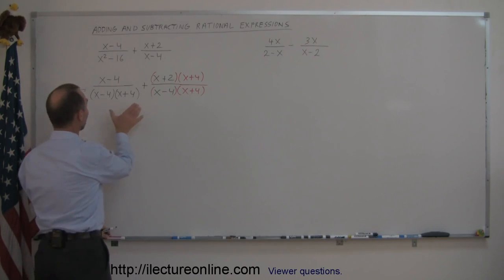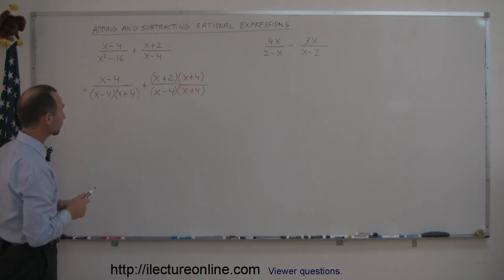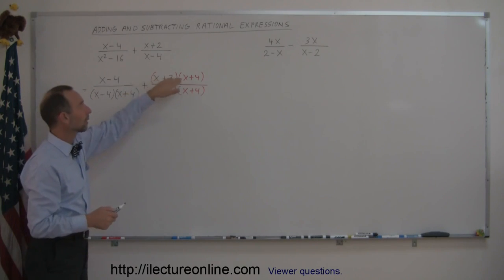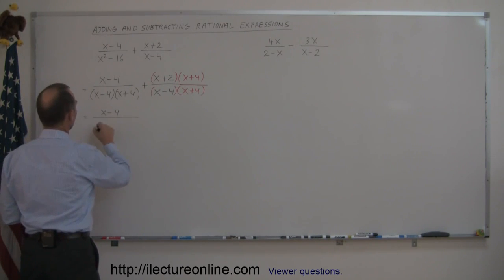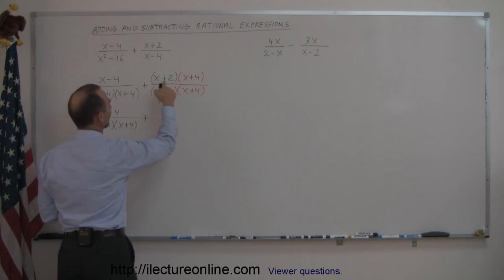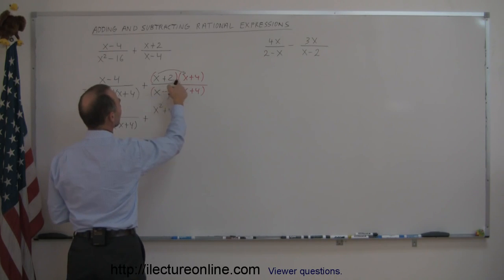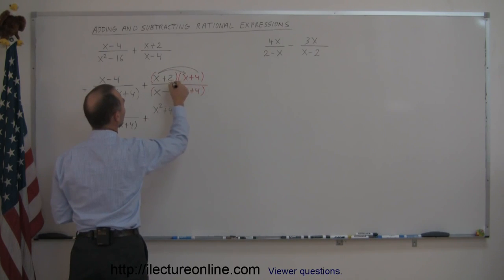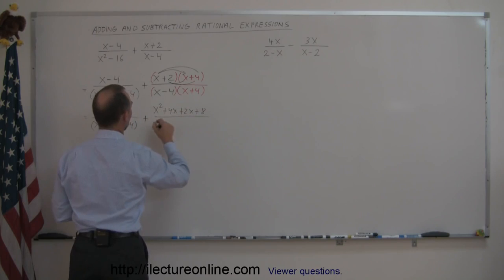When you look at this, the denominator now looks exactly the same, so we can go ahead and add the fractions. Before we do that, let's multiply out what we have in the numerator. This now becomes (x − 4) divided by (x − 4)(x + 4), plus — multiplying out — x times x gives x squared, x times 4 gives plus 4x, 2 times x gives plus 2x, and 2 times 4 gives 8, all divided by the common denominator (x − 4)(x + 4).